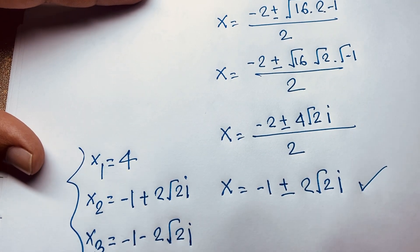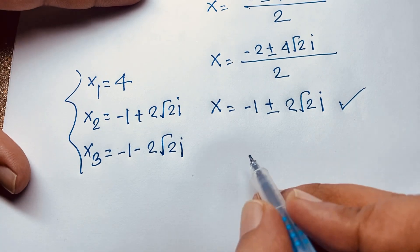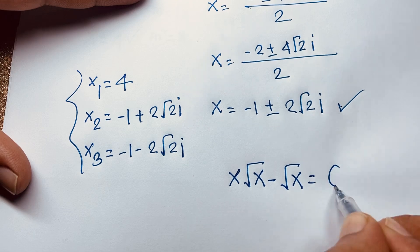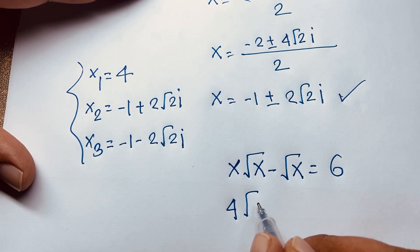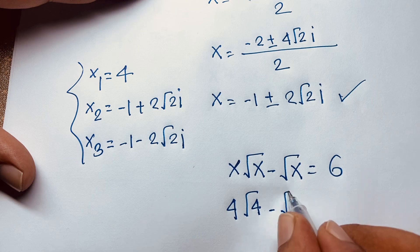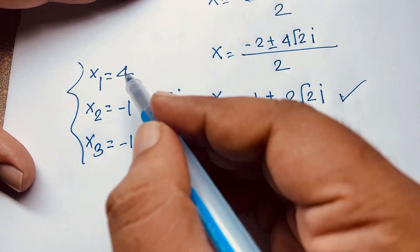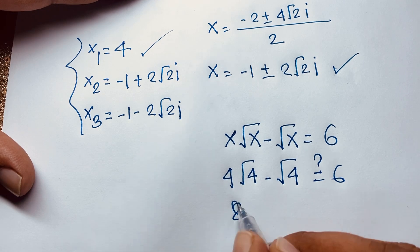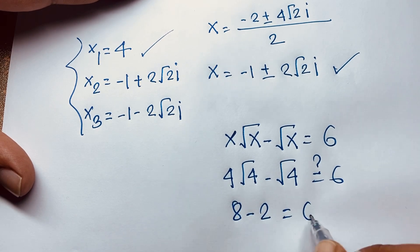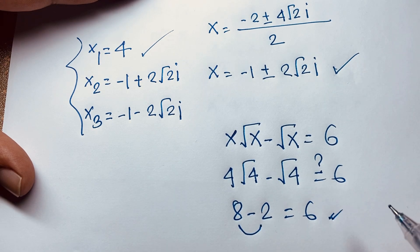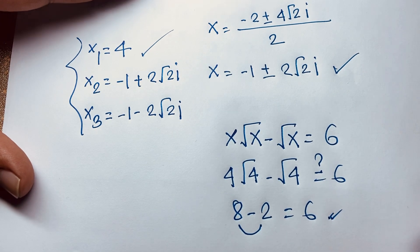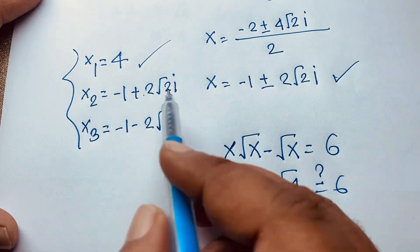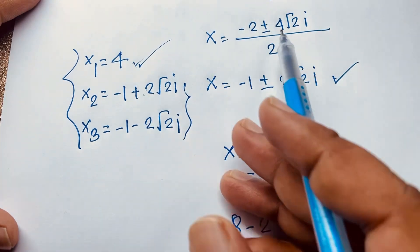This is our solution. Let's verify: substituting x equals 4 into x·√x minus √x, we get 4·√4 minus √4 equals 4·2 minus 2 equals 8 minus 2 equals 6. Left-hand side equals right-hand side. So our final real answer is x equals 4, while the other two solutions are complex.